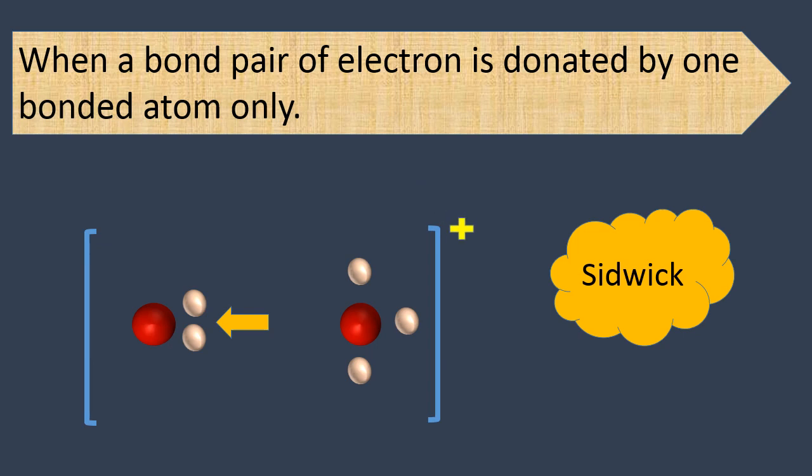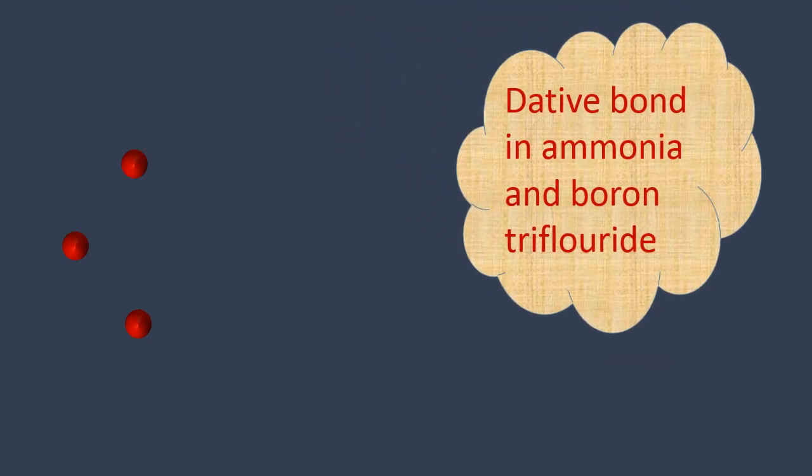Let's take another example. Coordinate covalent bond is also known as dative bond. So let's study an example of dative bond in ammonia and boron trifluoride.